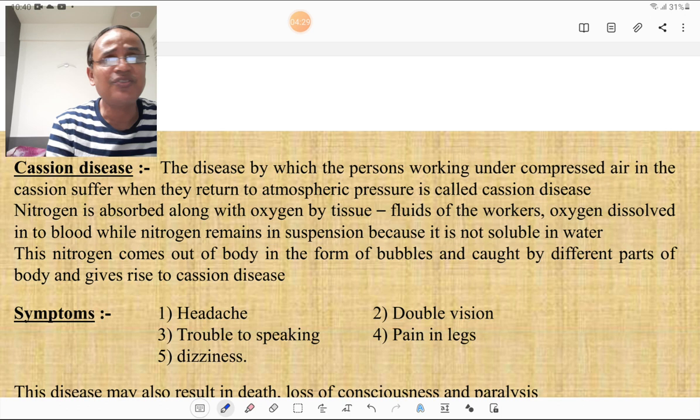The disease by which the person working under compressed air in the caisson suffer when they return to atmospheric pressure is called as caisson disease. The nitrogen is absorbed along with the oxygen by tissue fluids of the workers. Oxygen dissolved in the blood while nitrogen remains in suspension because it is not soluble in water. This nitrogen comes out of body in the form of bubbles and caught by different parts of body and gives rise to the caisson disease.